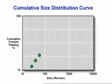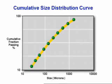We continue building the rest of the graph in the same way until all the material is weighed. The graph is known as a cumulative size distribution curve.